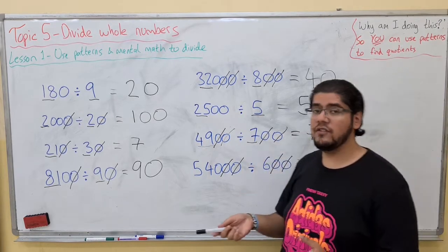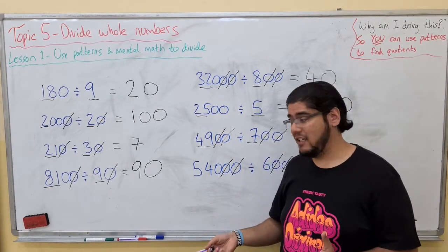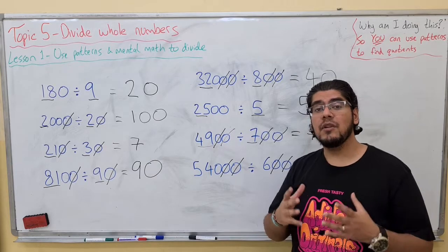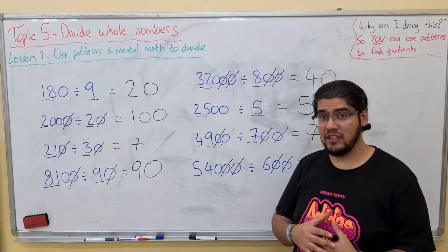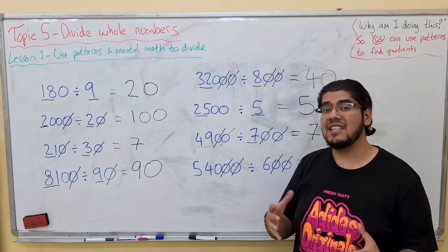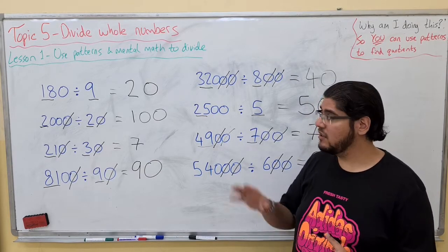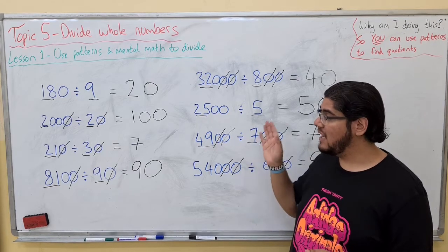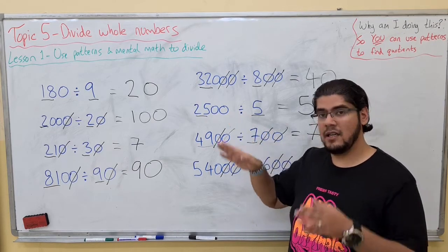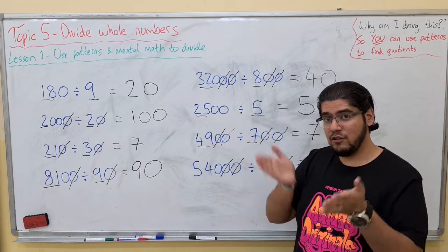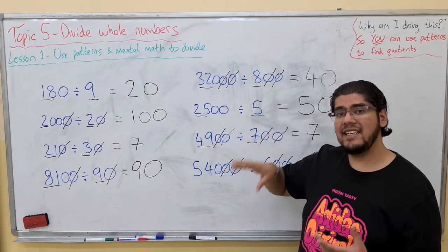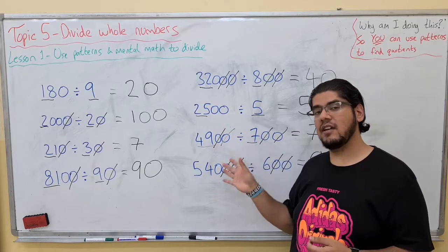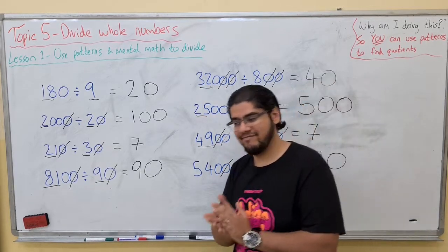So with all of these questions today, just use your multiplication skills from your times tables to find the answer. Then cancel zeros on both sides and add any remaining zeros at the end. That's all we're doing. Thank you.